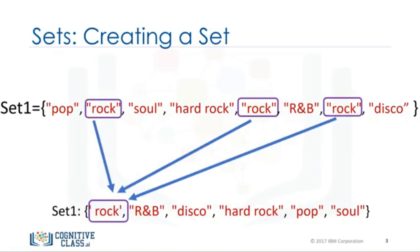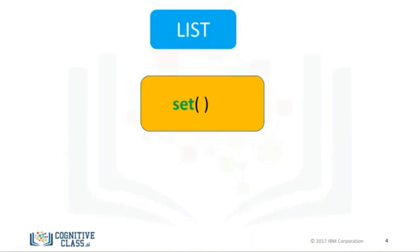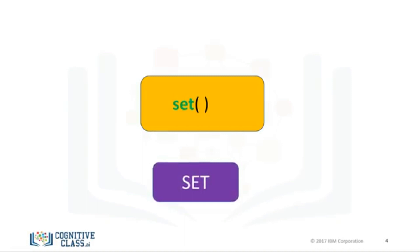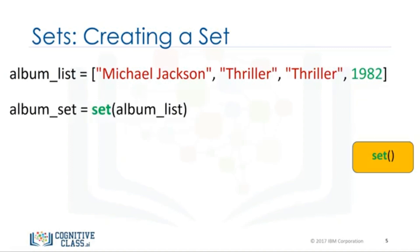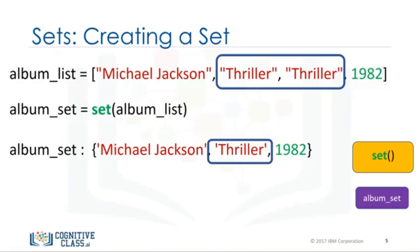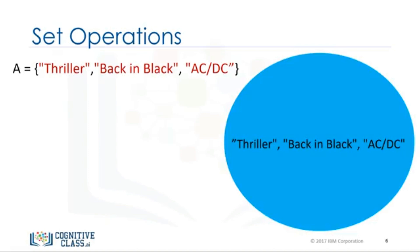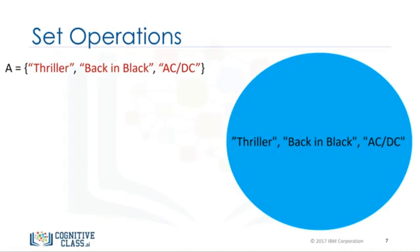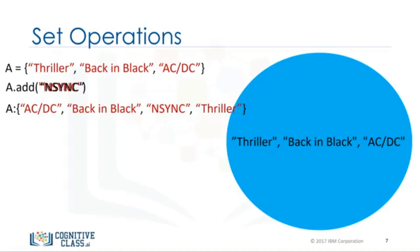You can convert a list to a set by using the function set. This is called typecasting. You simply use the list as the input to the function set. The result will be a list converted to a set. We start off with a list, input the list to the function set, and the function returns a set — notice how there are no duplicate elements. Let's go over set operations. These can be used to change the set. Consider the set A. Let's represent this set with a circle — if you are familiar with sets, this can be part of a Venn diagram. We can add an item to a set using the add method. We just put the set name followed by a dot, then the add method. The argument is the new element we would like to add — in this case, in-sync. The set A now has in-sync as an item.